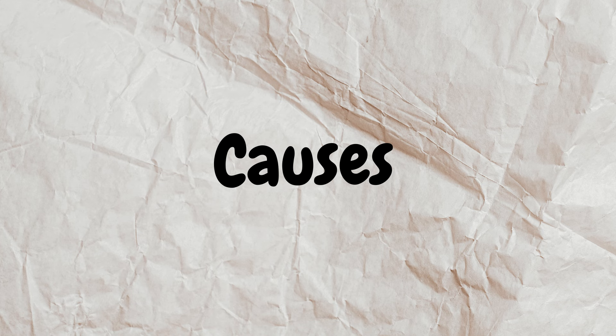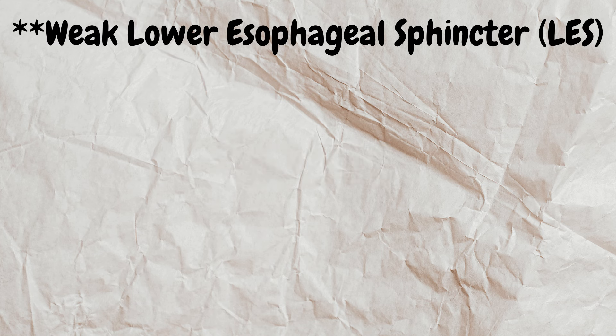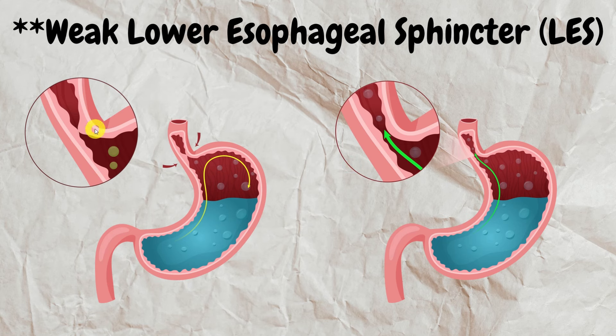The number one cause is the weak lower esophageal sphincter. This is a muscular valve at the lower end of the esophagus, designed to prevent stomach acid from flowing back. After swallowing, when food passes into the stomach, this sphincter closes tightly so that stomach contents cannot go back upwards. When the sphincter is weakened, it fails to close properly and acidic contents are easily refluxed into the esophagus, leading to GERD.